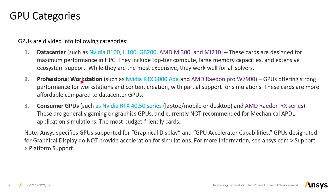Next are the professional workstation cards. Examples include the RTX 6000 ADA, the RTX PRO 6000, and the AMD Radeon PRO W7900. While similarly optimized for graphics and media production, they also offer some capabilities for simulation workloads. Workstation cards are more affordable compared to data center cards.